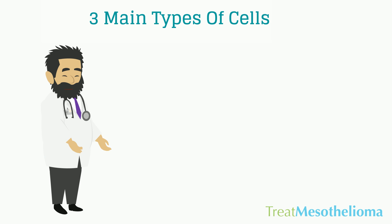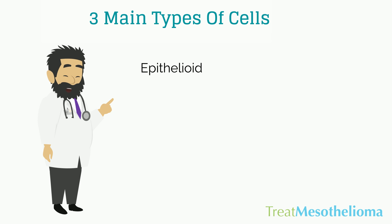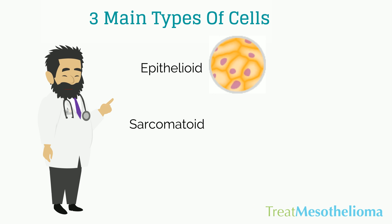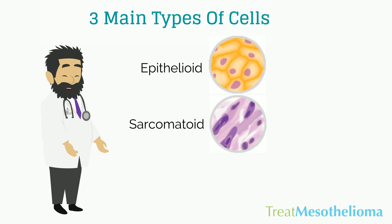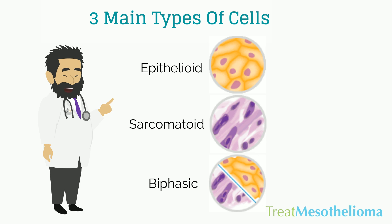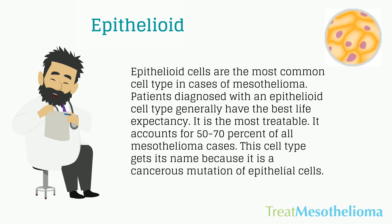There are three main mesothelioma cell variations. Epithelioid, the most common, with a better prognosis compared to the other two types. Sarcomatoid, or fibrous, which accounts for about 10% of mesotheliomas — the most rare and worst possible prognosis. And biphasic, a mixed type — these mesotheliomas have both epithelioid and sarcomatoid cell characteristics.